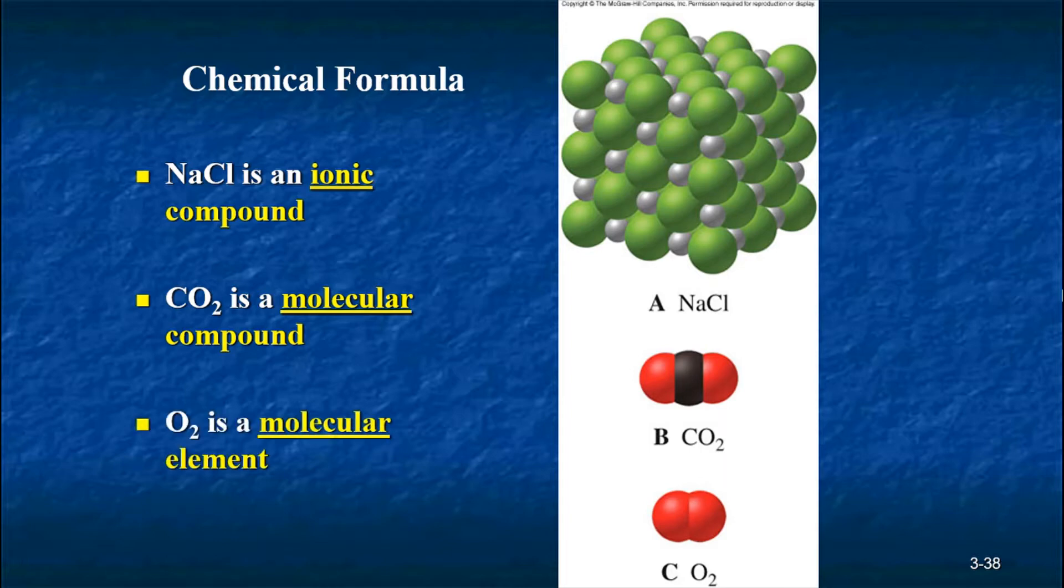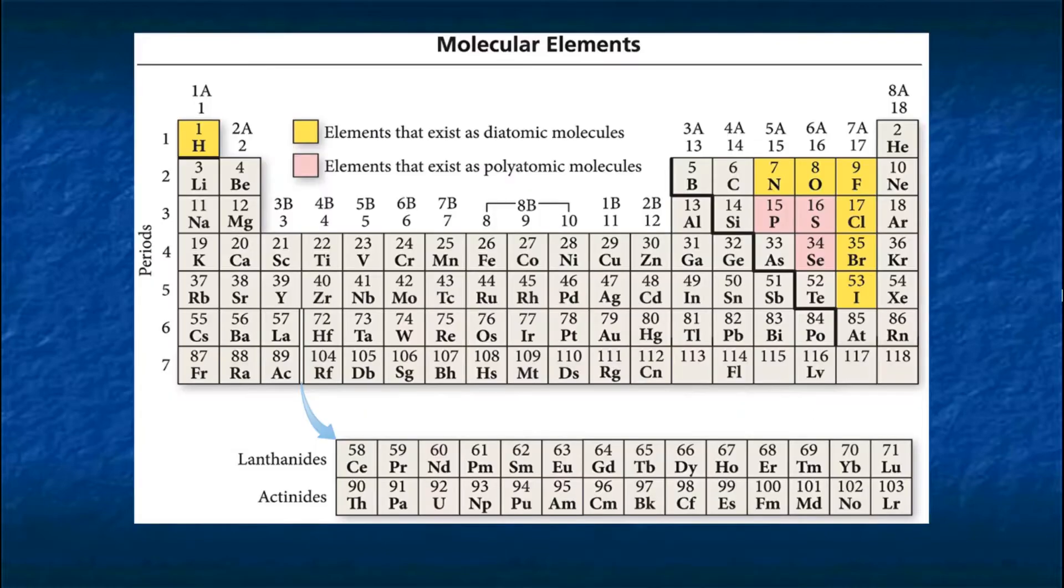Now a special case here in terms of molecules is what we see here on the bottom, O2. This is what we mean when we say oxygen. It's actually the diatomic molecule of oxygen that exists naturally. We call this a molecular element. Oxygen is not unique in this. If we look at the next slide here, we can see on this periodic table that there are a set of elements that exist in nature as diatomic molecules.